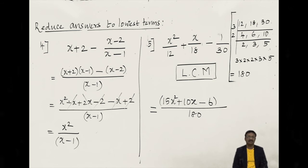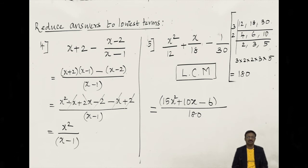The LCM is 180. Multiply the numerator of the first term by 180 ÷ 12 = 15, giving 15x². Multiply the second numerator by 180 ÷ 18 = 10, giving 10x. Multiply the third numerator by 180 ÷ 30 = 6, giving 6. The simplified result is (15x² plus 10x minus 6) all divided by 180. This is how you simplify rational expressions with numeric denominators — you must be strong in finding the LCM.